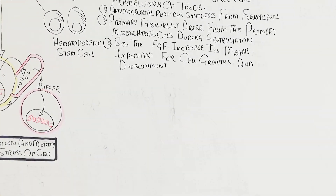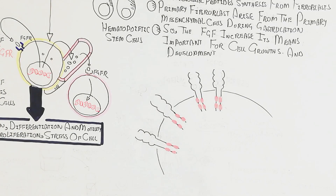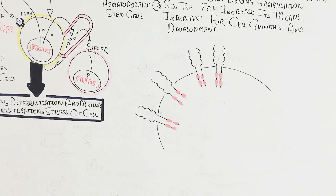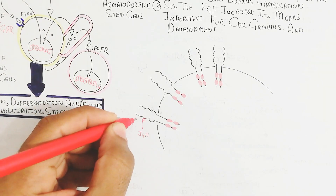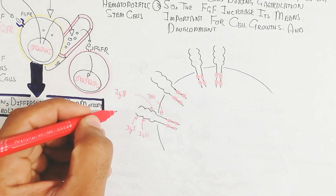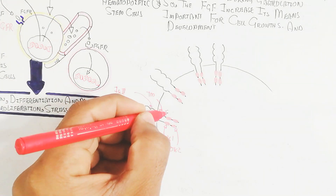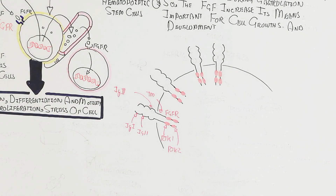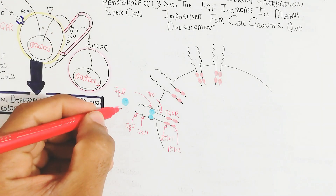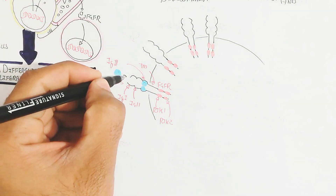Now let's understand the FGF receptor generally — we will cover detail in a separate video. The receptor has extracellular domains IG1, IG2, and IG3, and an intracellular receptor tyrosine kinase domain 1 and 2. This is the basic FGF receptor structure.